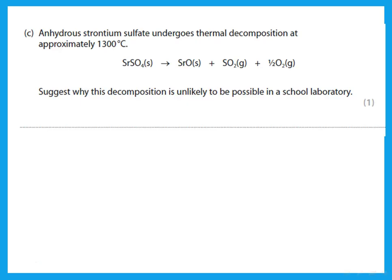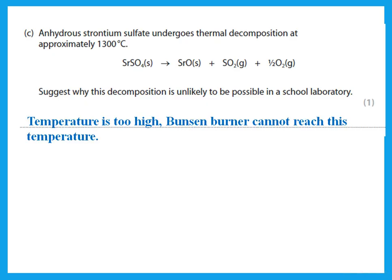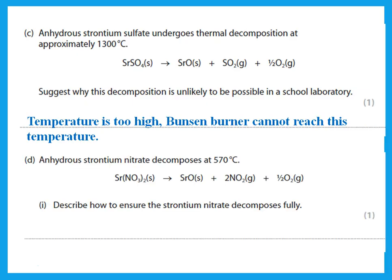Anhydrous strontium sulfate undergoes thermal decomposition at approximately 1,300 degrees. Suggest why this decomposition is unlikely to be possible in a school laboratory. The temperature is too high—the Bunsen burner cannot reach this temperature. Anhydrous strontium nitrate decomposes at this temperature. Describe how to ensure that the strontium nitrate has decomposed fully. Keep heating and reweighing. At the beginning, the mass will decrease, and then as I continue, the mass will become constant.